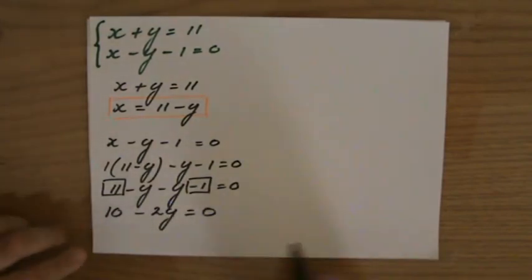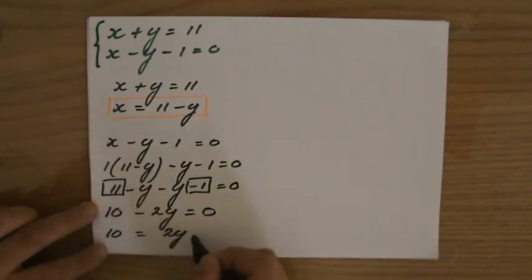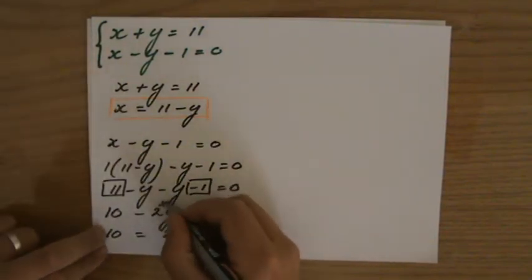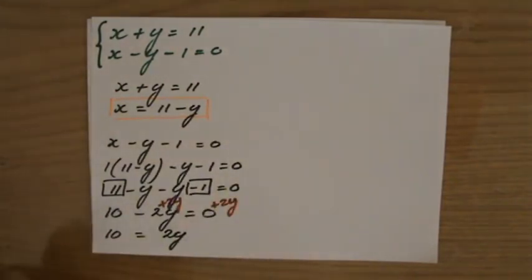I want to find out the value of y. So, I'm going to add 2y on both sides. Did you see what I just did? I plused it by 2y here. So, I'm going to plus it on the right side as well. So, 10 equals 2y.